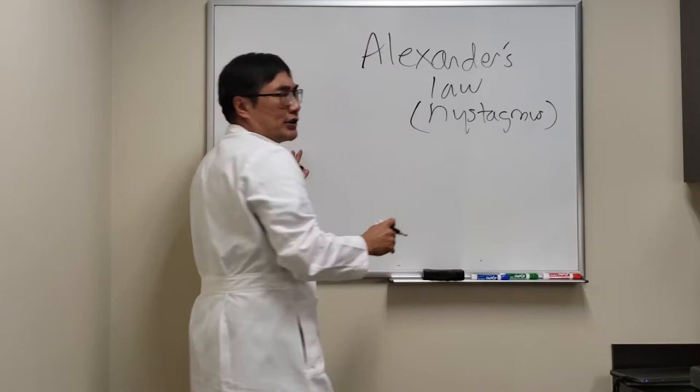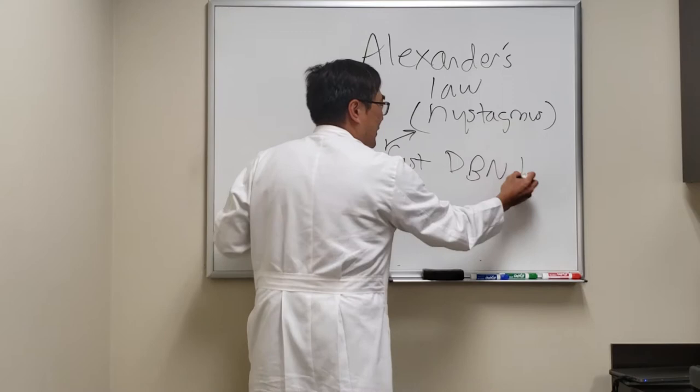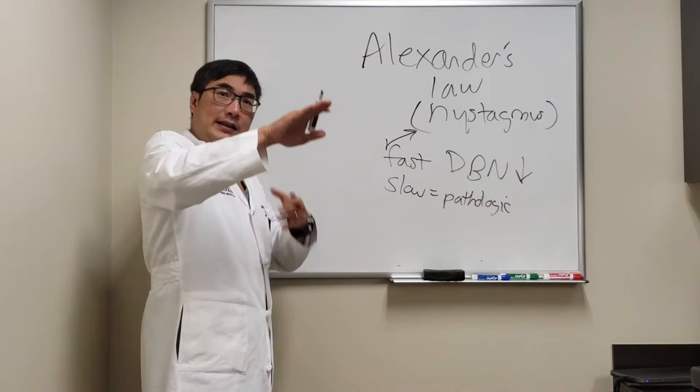Even though we name nystagmus for the fast phase, so for example downbeat nystagmus is going to be fast phase down, it's actually the slow phase that is the pathologic portion of the nystagmus. So it's the slow drift upward that is pathologic. The downbeat is a corrective saccade to get the fovea back on the target.